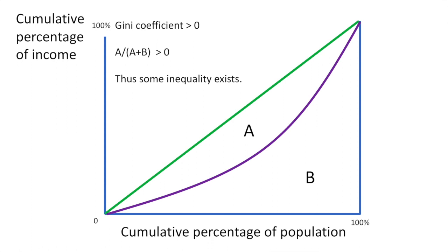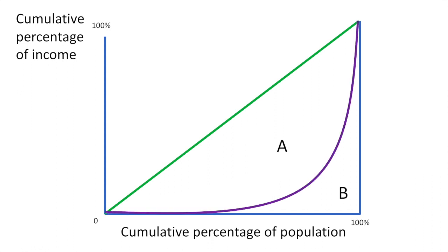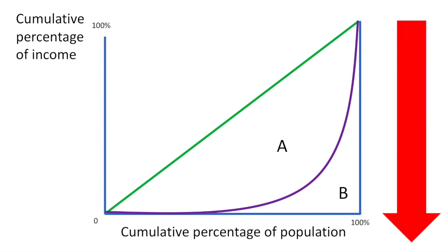The situation here indicates that some inequality exists. Next, let's consider the example of a society with even greater inequality. The length of the red arrow will allow you to make a relative comparison of inequality between the diagrams we're going to analyze. You'll notice that in this more unequal society, the area of A is larger than before. The larger A gets, the more inequality that exists. Of the three diagrams, this will be the most unequal society, in which most of the country's income belongs to a smaller percentage of households.